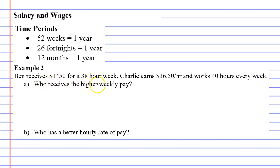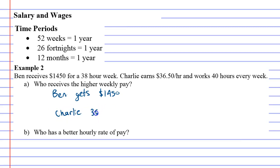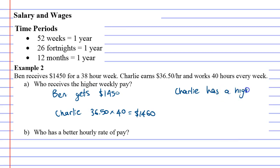Question A says: who receives the higher weekly pay? We already know what Ben's receiving — Ben gets $1,450 per week. Then we've got to look at Charlie. Charlie, we just know what he gets per hour: $36.50 per hour and he works 40 hours. So we're just going to multiply that — 36.50 times 40 hours — so he gets $1,460. Charlie gets more pay. When you get questions like this, you should finish with a sentence: Charlie has a higher weekly pay.